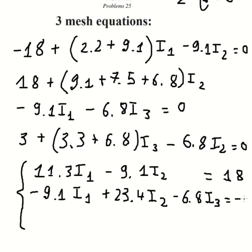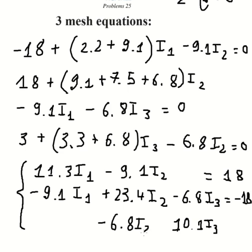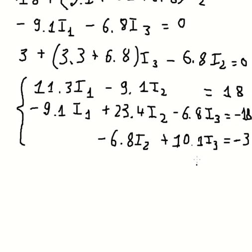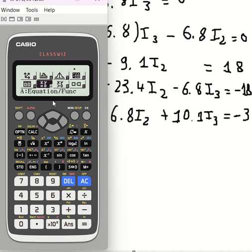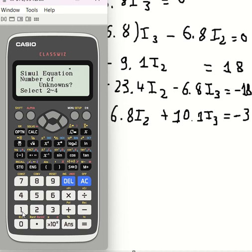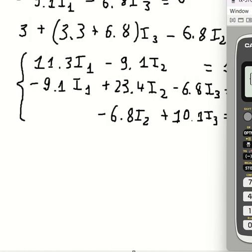For mesh three we have minus 10.5 times I2, negative 18 on the right side, and the coefficient calculates to about 10.1 times I3. Negative 6.8 times I2. We put those on the right side and now we use the calculator. We go in, select three variables, and enter all the numbers.